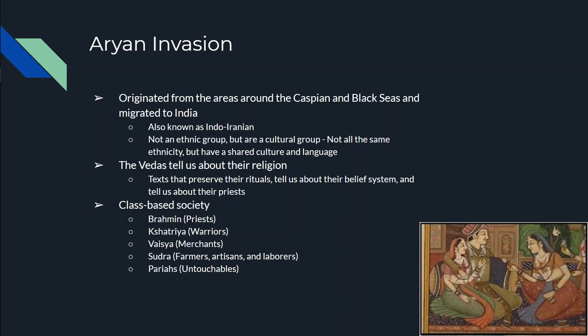Now the Caspian Sea and the Black Sea — that's going to be southern Russia, like Armenia, Georgia, Kazakhstan, Uzbekistan — all those types of places near the Caspian and Black Sea. These people are going to move from that area somewhere around 1500 BC and migrate into India. And they're not actually an ethnic group — they're a cultural group. An ethnic group and a cultural group are similar but not the same. They're not all the same ethnicity, but they have a similar culture and a similar language, which is why they're a cultural group.